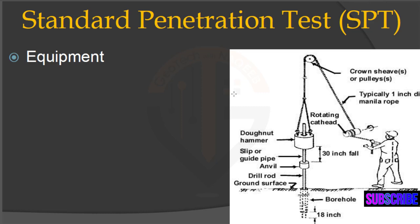This figure shows the schematic diagram of the Standard Penetration Test. You can see the tripod stand with a pulley to pull the weight and drop it in free fall from a certain height. This is a donut type hammer having a weight of 63.5 kg. The guide rod guides the hammer to drop from a certain height onto an anvil, and the force of the hammer is transferred through the drilling rod to the soil.